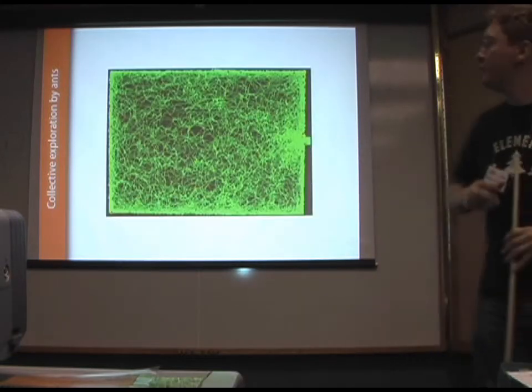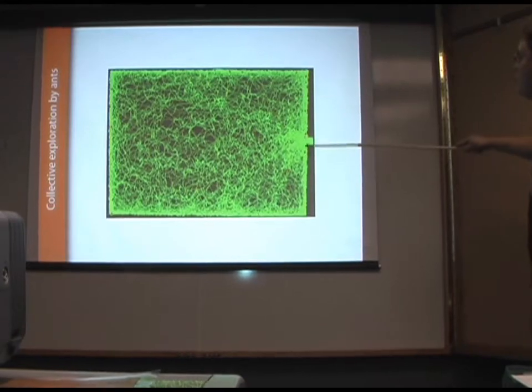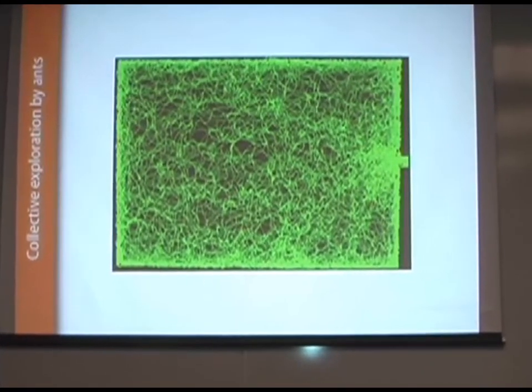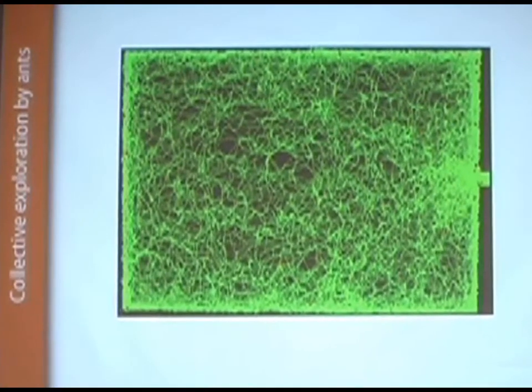And I can track the motion of all the individuals simultaneously. The red dots represent where the ants currently are, and these green lines represent the trajectories. And we can begin to ask questions about how simple are these agents? How simple are these ants? Are they doing anything at all clever?